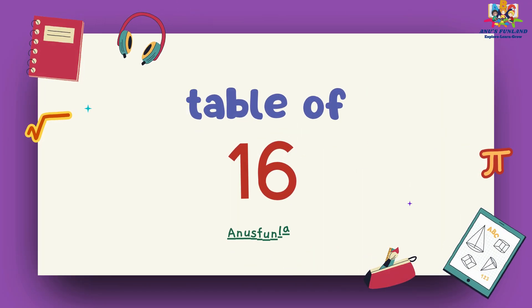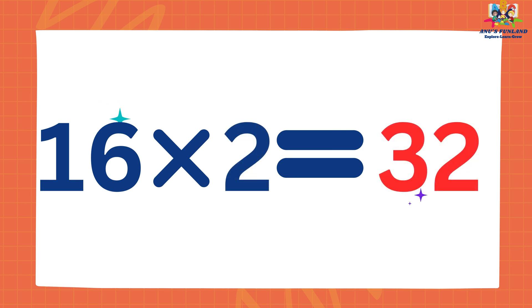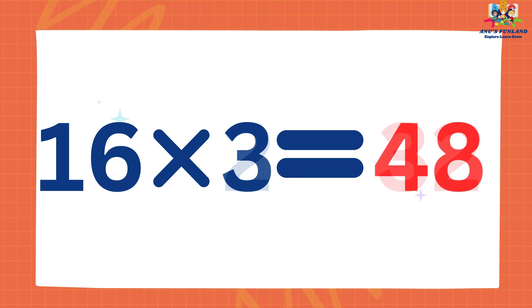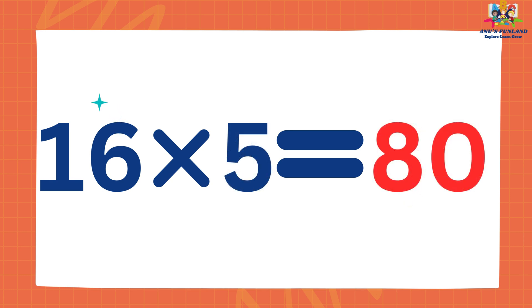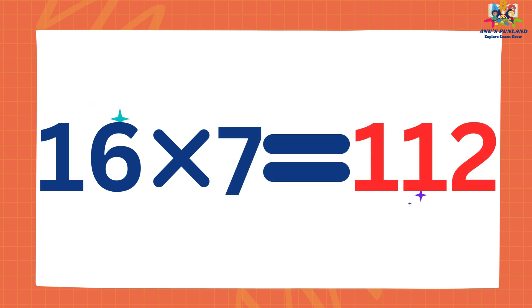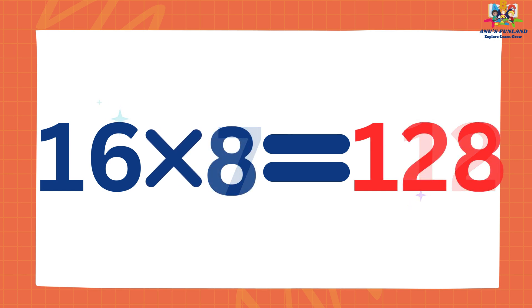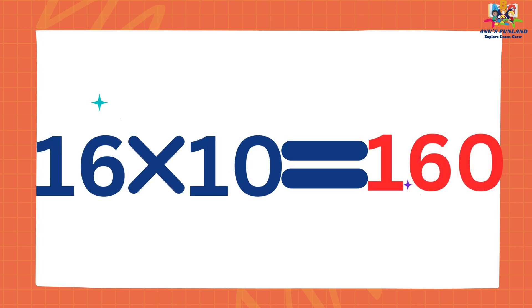Now we will learn table of 16. 16 ones are 16. 16 twos are 32. 16 threes are 48. 16 fours are 64. 16 fives are 80. 16 sixes are 96. 16 sevens are 112. 16 eights are 128. 16 nines are 144. 16 tens are 160.